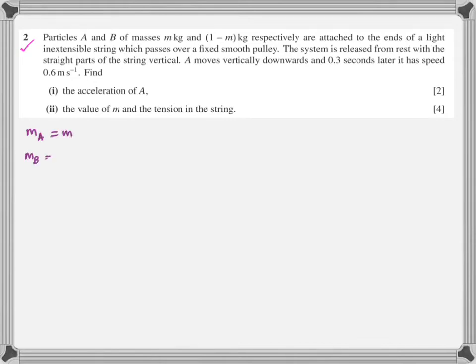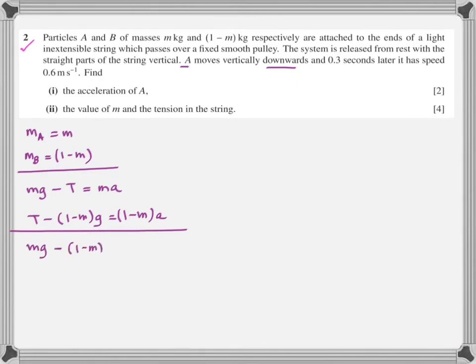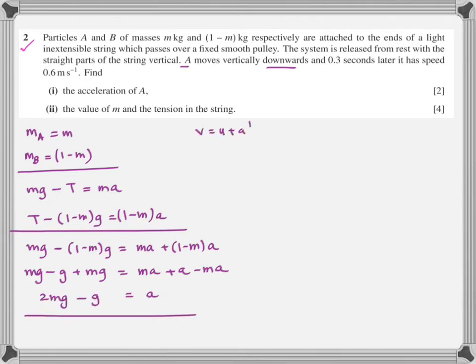So mass of A is m, mass of B is (1-m), A is heavier. mG minus tension equals mass into acceleration. For the other one, tension minus the remaining mass multiplied by gravity: T - (1-m)G = (1-m)A. It's a pretty simple question, just take care of these things. Add both equations, simplify it, take care of the plus minus signs. What happens is 2mG - G = acceleration. Now where is the acceleration? I can find it using a simple equation of motion.